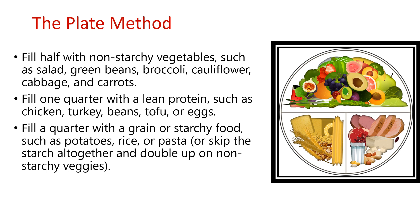One way to plan your meal is the plate method. Half of your plate should be filled with non-starchy vegetables like salads, green beans, broccoli, cauliflower, cabbage, and carrots. Fill one quarter with lean protein such as chicken, turkey, beans, tofu, or eggs. Fill one quarter with a grain or starchy food such as potatoes, rice, or pasta — and if you want, you can skip the starch and replace it with fruits and vegetables.